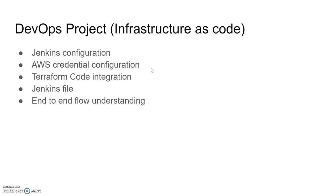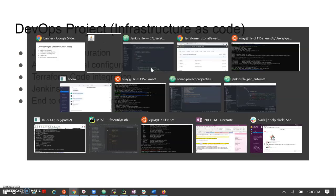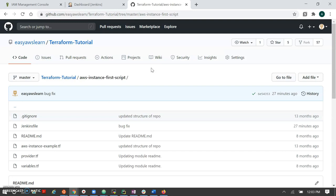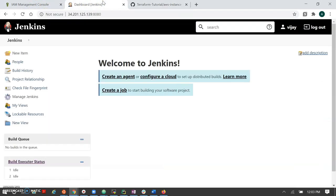Things we are going to cover in this session: Jenkins configuration, including what we have to configure using the Jenkinsfile. Next, we configure the AWS credentials — how to get them from AWS IAM and store them in Jenkins. Then we cover Terraform code integration — how Terraform commands like init, plan, and apply work to create infrastructure. Finally, we'll see the full end-to-end flow using Jenkins to trigger our job and deploy an EC2 instance in AWS.